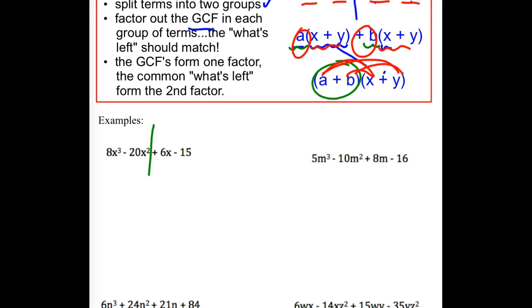So, do I have a GCF for those first two terms? What would it be? 4x squared. What is the leftover pieces if I factor out a 4x squared? A 2x and a negative 5. So, 2x minus 5.